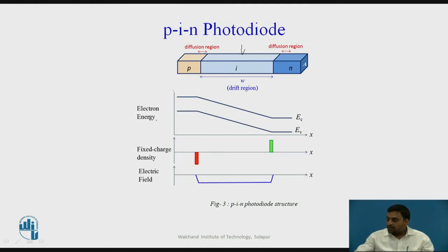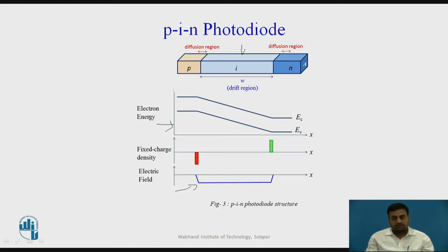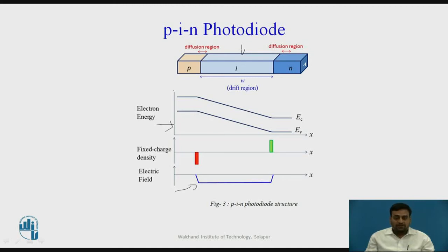In the figure, the electric field distribution is also shown for the PIN photodiode. The middle layer offers high resistance and most of the voltage drop occurs across it. The electric field distribution shows that most of the voltage drop occurs across the intrinsic middle region. The main difference from the PN photodiode is that the drift component of the photocurrent dominates over the diffusion component, simply because most of the incident power is absorbed in the intrinsic region. The optimum width of the drift region depends on a compromise between the speed and the sensitivity of the PIN photodiode.